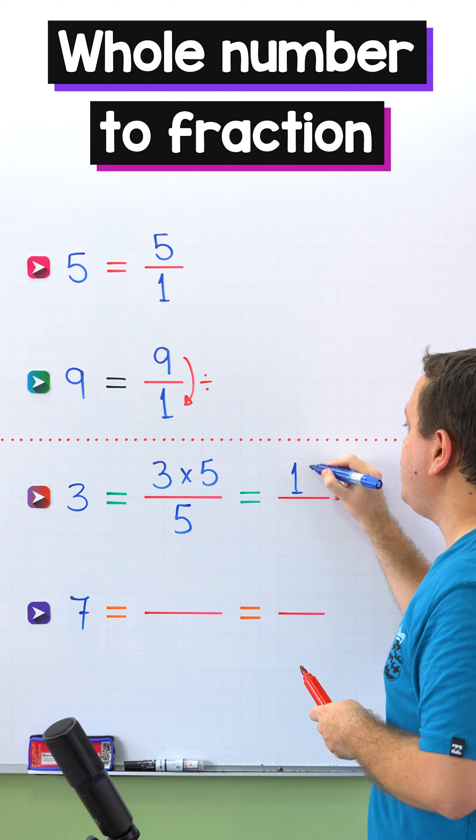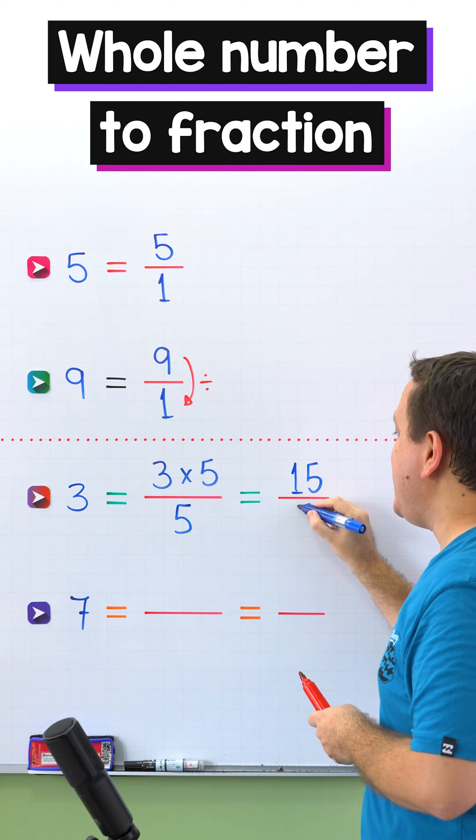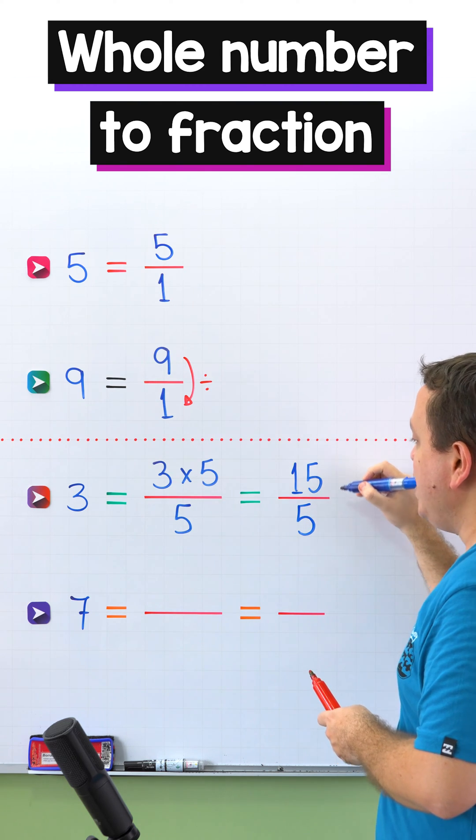3 times 5 equals 15. Finally, we keep the denominator the same, so 3 is equivalent to 15 fifths.